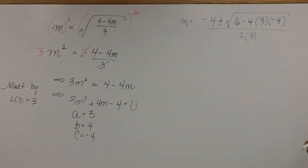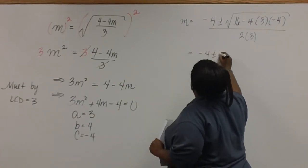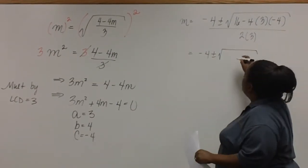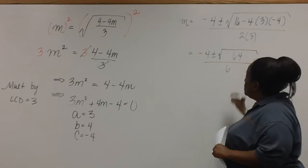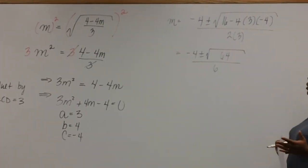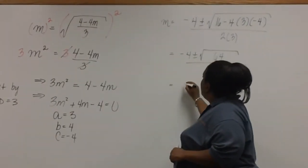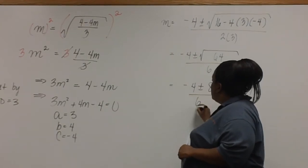Now we need to simplify under the radical. Simplifying under the radical, you should get 64 all over 6. The square root of 64 is perfect. It equals 8. So that now we can write negative 4 plus or minus 8 over 6.